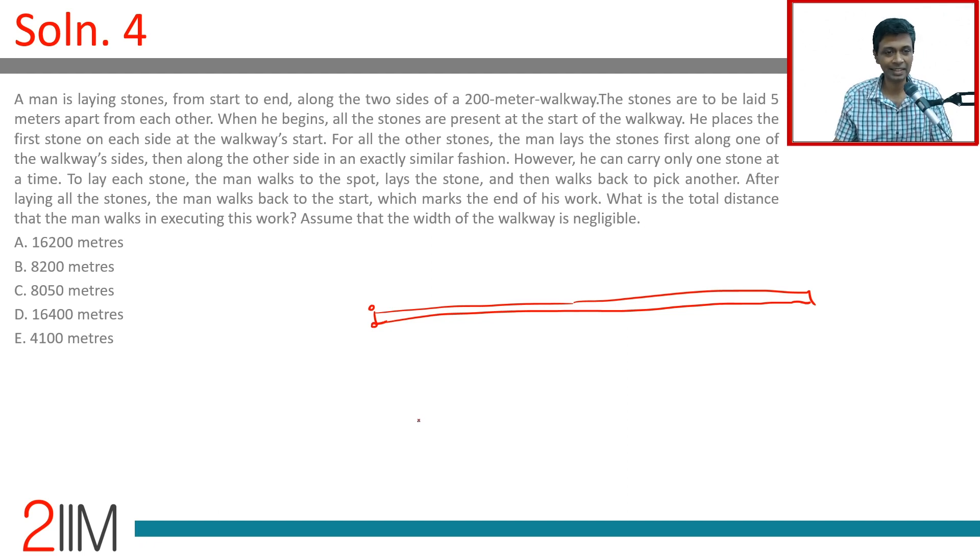Then he starts laying at 5 meter distances. When he begins, all the stones are present. He places the first stone on each side of the walkway's start. He's done that. Then, at 5 meter, 10 meter, 15 meter, 20 meters, 25 meters, he keeps on laying stones. He puts them all on the one side and then on the next side. At that time, he can carry only one.